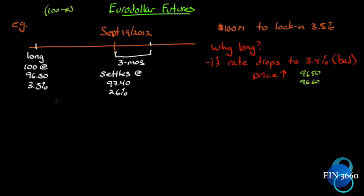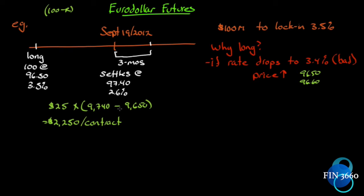How much was made on the futures contract? Every basis point is worth $25. We can see that it went up 90 basis points, so we multiply by 90. Doing it the long way: 97.40 implies 9,740 basis points minus 96.50's 9,650 basis points — that's our 90. We get $2,250 per contract. Each contract is for one million dollars, and we have 100 contracts, so we multiply by 100. On the final day of settlement, the long position will have two hundred and twenty-five thousand dollars.